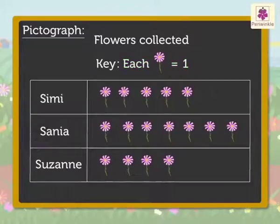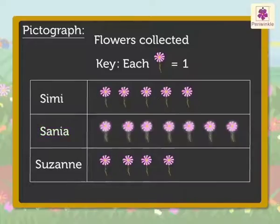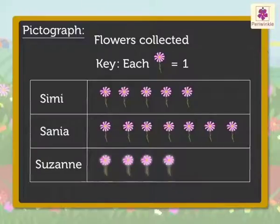Hence, from the pictograph, we can say Simi collected 5 flowers, Sanya collected 7 flowers, and Suzanne collected 4 flowers.